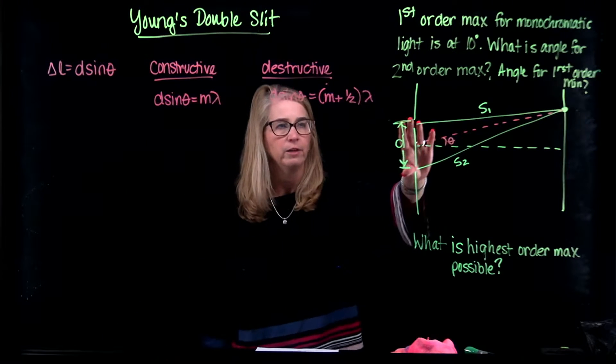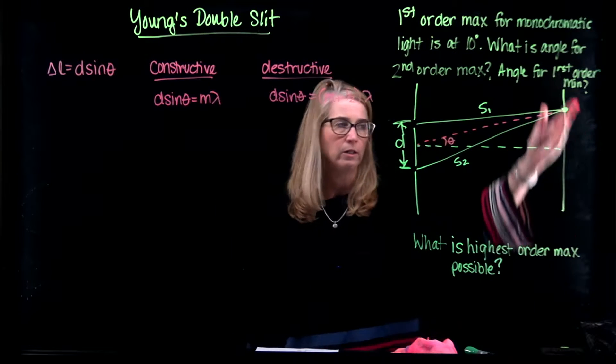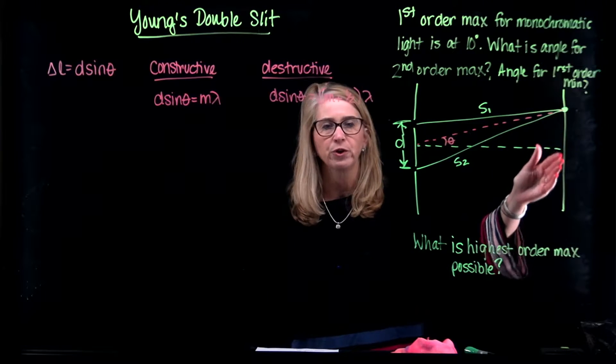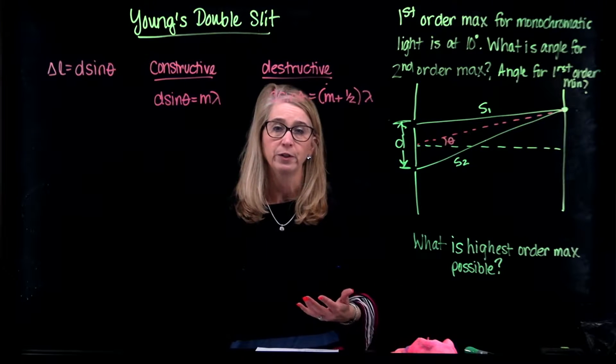If we allow the light rays to pass only through the holes and they go to a screen that is some distance away, we're going to have alternating bright spots and dark spots. This is the interference pattern.